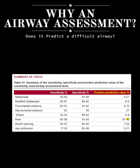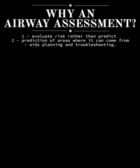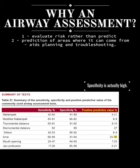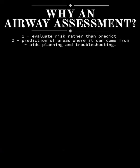What is the utility of an airway assessment? Is it the prediction of a difficult airway? No. This is a table from the Australian and New Zealand College of Anaesthetists showing that the positive predictive value of any test or set of tests is very low in predicting a difficult airway. The utility is in evaluating risk: the more problems you find, the more likely you are to have an airway problem. It also helps predict where a problem can come from and how you may troubleshoot it.